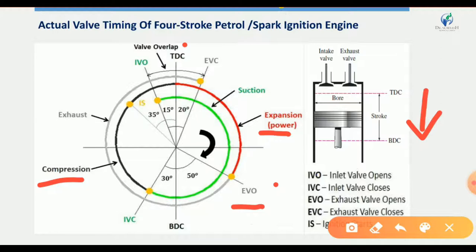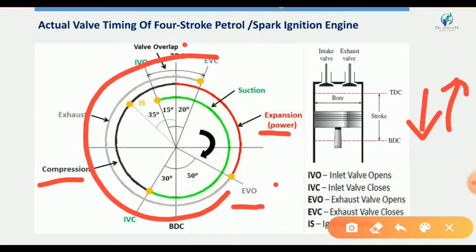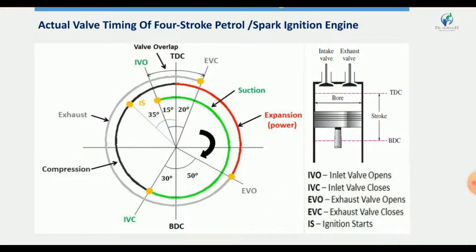The exhaust valve opens 50 degrees before BDC during the expansion stroke. The exhaust stroke begins, and the piston travels from BDC to TDC, expelling the burnt gases. The exhaust valve closes approximately 20 degrees after TDC. This is the process of the four-stroke petrol engine valve timing diagram.